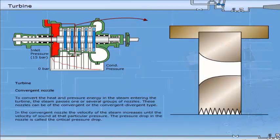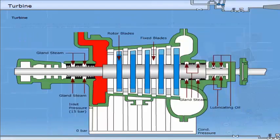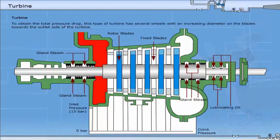The pressure drop in the nozzle is called the critical pressure drop. To obtain the total pressure drop, this type of turbine has several wheels with an increasing diameter on the blades towards the outlet side of the turbine.